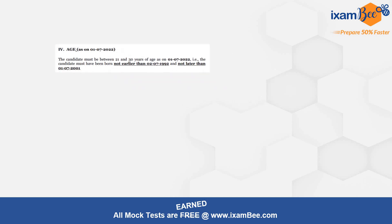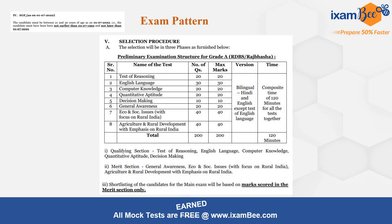Let's have a look at the exam pattern. There are three phases: Phase 1, Phase 2, and Interview. In the Prelims exam you have 8 subjects: Reasoning, English, Computer Knowledge, Quantitative Aptitude, Decision Making, General Awareness, Economic and Social Issues with Focus on Rural India, and Agriculture and Rural Development with Emphasis on Rural India.